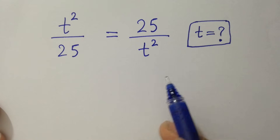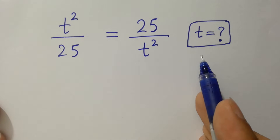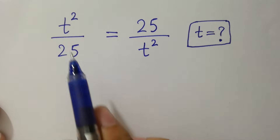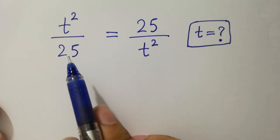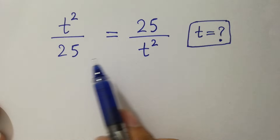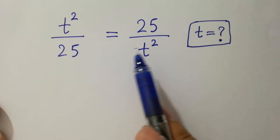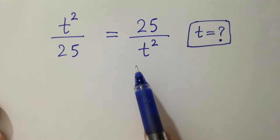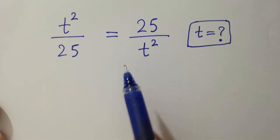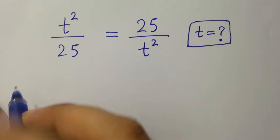Hello friends. Find the value of t if t² over 25 equals 25 over t². Let's have a solution.